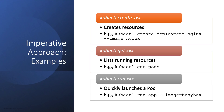Regarding example usage, you can use the kubectl create command to create resources. The kubectl get command will list the running resources, while the kubectl run command can quickly launch a pod.